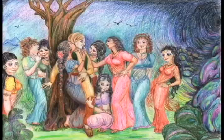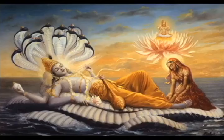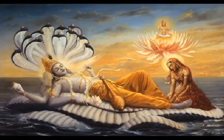Beneath Bhumandala and its lower strata, there is the Garbhodak ocean with Ananta Shesha and Garbhodakashayi Vishnu. These divine incarnations are said to be inaccessible to persons who lack the qualifications to see them.